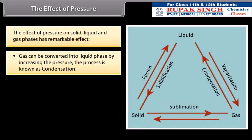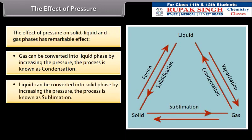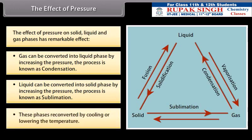Gas can be converted into liquid phase by increasing the pressure. The process is known as condensation. Liquid can be converted into solid phase by increasing the pressure. The process is known as sublimation. These phases reconvert by cooling or lowering the temperature.